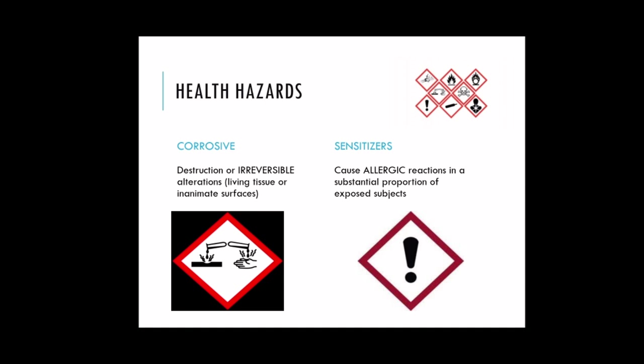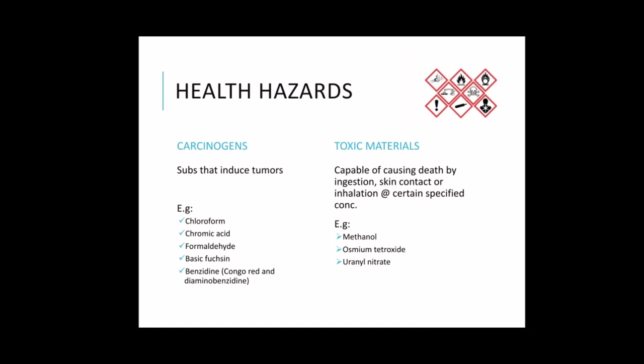Sensitizers cause allergic reactions in a substantial proportion of exposed subjects, not just in hypersensitive individuals. Sensitization may occur at work because of high exposure levels. Carcinogens are substances that induce tumors in both experimental animals and humans. Examples of carcinogenic chemicals include chloroform, chromic acid, formaldehyde, nickel chloride, and potassium dichromate. Carcinogenic dyes include oramin, basic fuchsin, and any dye derived from benzidine, including Congo red and diaminobenzidine.